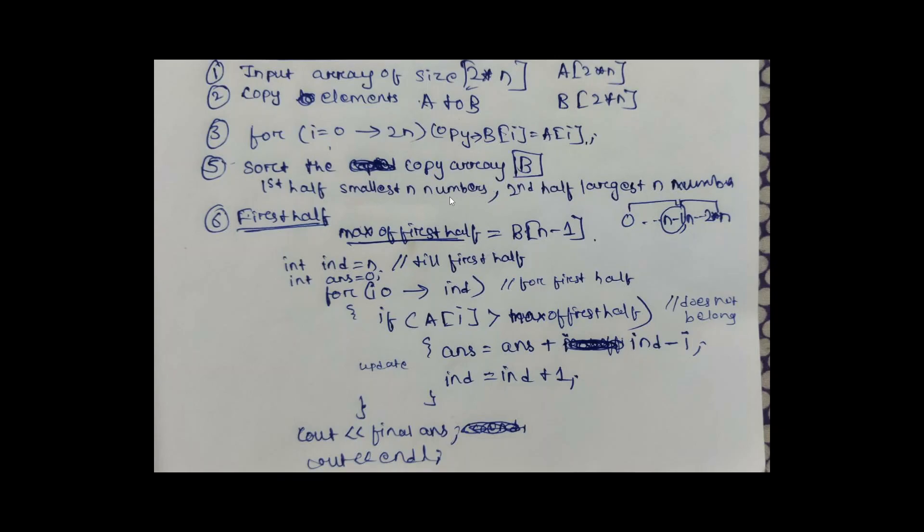Moving on to the first half, we have to find the maximum element of the first half. The maximum element of the first half is the last element of the first half. The first half ends at N minus 1, so the max first half is at index N minus 1.